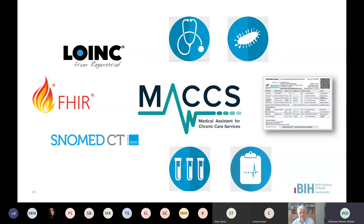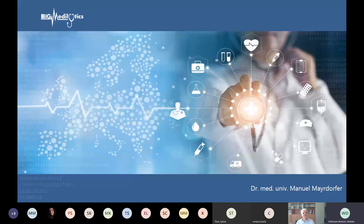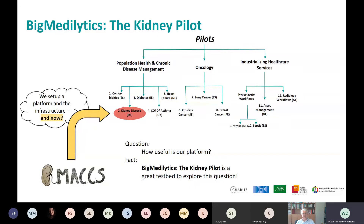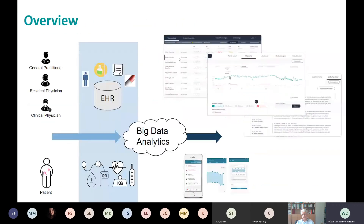Hello, everybody. My name is Manuel Meierdorfer. I'm part of the research group Digital Nephrology, and I'm going to use the next five minutes to introduce the Big MediLytics project. It's funded by the European Union, with several pilots all over Europe. In our pilot, we focus on kidney disease together with our partners from the DFKI — the German Research Center for Artificial Intelligence — the Hasso Plattner Institute, and the University Hospital in Essen. The main idea: we need big amounts of data and we want to analyze it using machine learning to predict certain events.